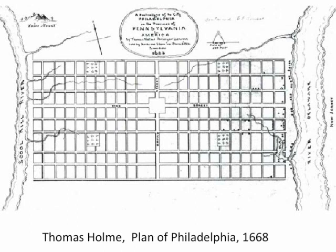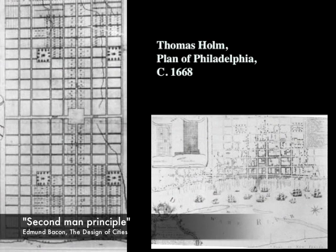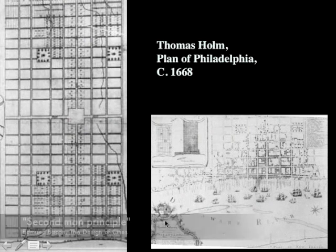What actually happened is these two rivers aren't exactly equal. The Delaware is a great navigable river, while the Schuylkill is full of little cataracts — you couldn't use it as a mercantile port in the same way. The old city of Philadelphia grew up largely around the Delaware River. However, if we remember Edmund Bacon's notion of the second man principle: if you put a diagram in place and it's strong enough, you don't have to fill the whole thing out at once. History will fill out the diagram for you, which is in fact what happened.